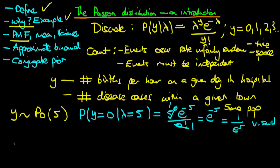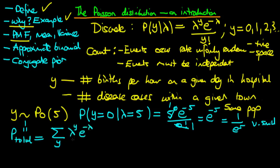We can also verify that the Poisson distribution is a proper probability distribution. One requirement is that the sum of probabilities across all possible counts must equal one. So we need to show that summing across all values of y of lambda to the power y, times e to the power minus lambda, divided by y factorial, gives one — remembering this is a sum because we're summing over discrete values of y.